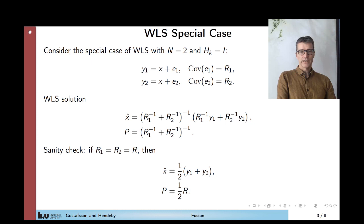And as a standard check, let's suppose that the covariance is the same. Then all R's cancel out, and x hat is the average of y1 and y2, and its covariance is half of the covariance of each measurement.